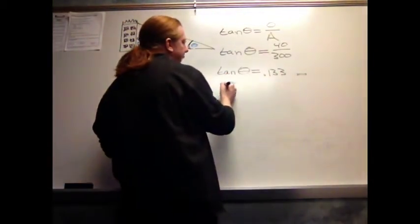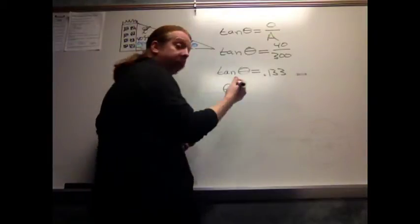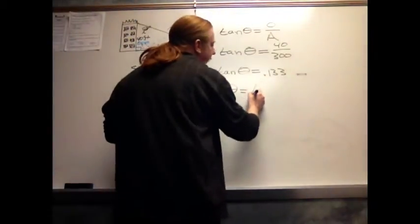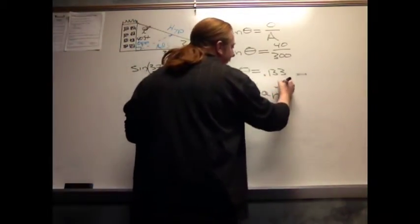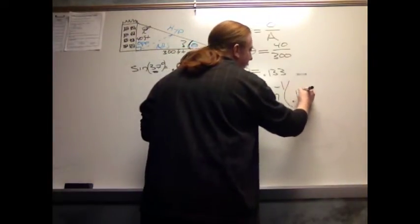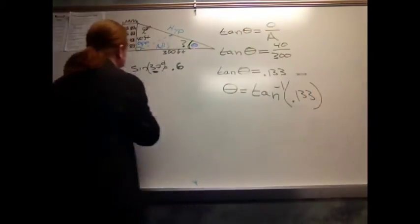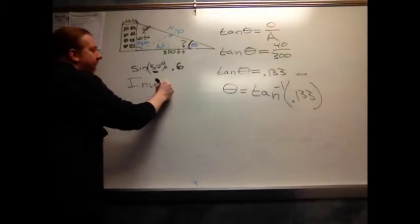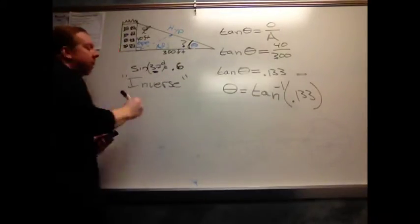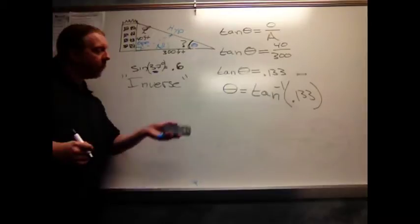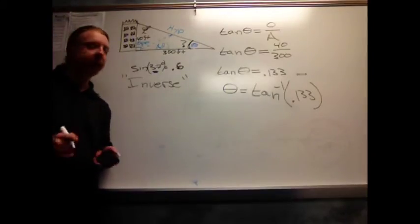Now, one way I write this notationally is to say that my angle, and it's going to tell me, is the inverse tangent of .133. Remember, inverse means to do the mathematical opposite. That's what I'm asking the calculator to do here.